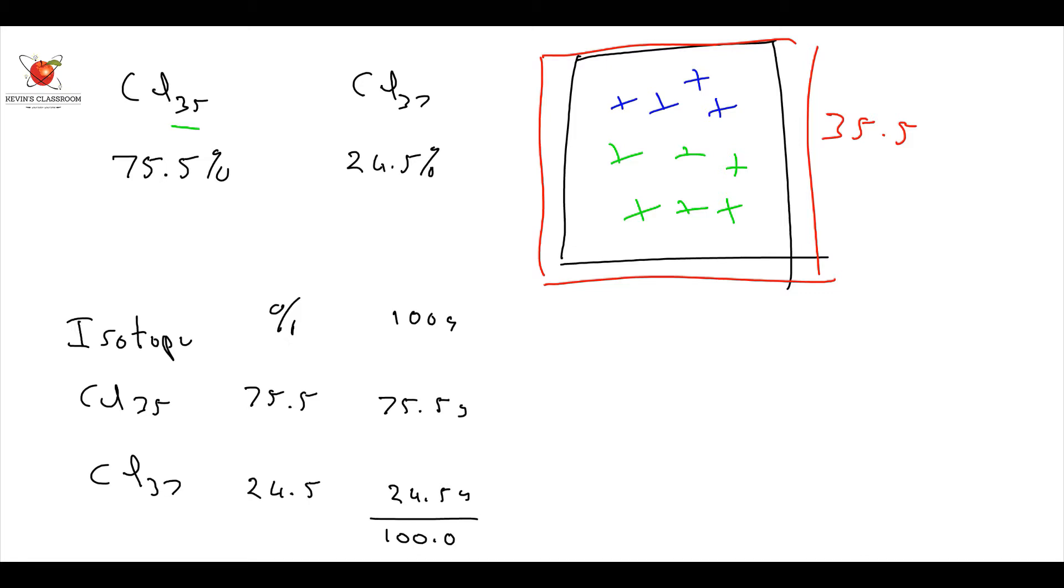Then I look up my mass, my molecular mass. The molecular mass of this guy is 35 and this one is going to be 37. So, therefore, I say the total mass is going to be, as a ratio, is 75.5 times 35. So, it's going to be 75.5 times 35, right? That gives me 2642.5.